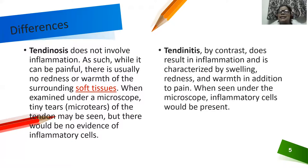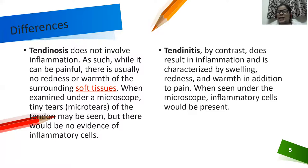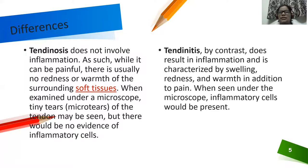Tendinitis, by contrast, results in inflammation characterized by swelling, redness, and a feeling of warmth in addition to pain. When seen under the microscope, inflammatory cells would be present. This is totally different from tendinosis.